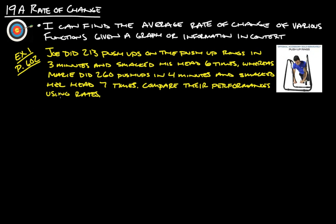So with that, let's try this example one from page 602. Joe did 213 push-ups on the push-up rings in three minutes and smacked his head six times, whereas Marie did 260 push-ups in four minutes and smacked her head seven times. Compare their performances using rates.